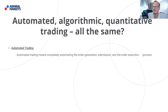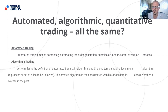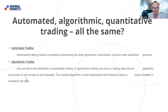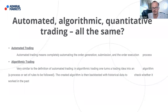Algorithmic trading is similar to the definition of automated trading, though slightly different. An algorithm follows a clear plan — you turn a trading idea into an algorithm, a process or set of rules to be followed. The created algorithm is then back-tested with historical data to check whether it worked in the past. For example, with the gold strategy, the idea was to test a simple approach born when someone came to me and asked whether a strategy he'd seen presented at a webinar actually worked.